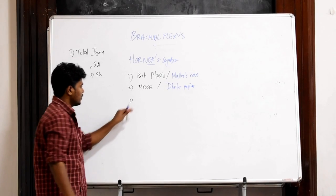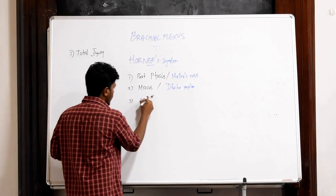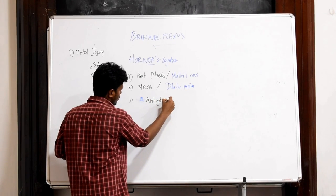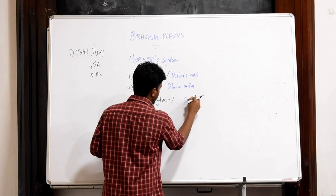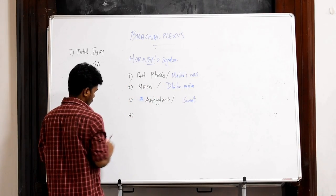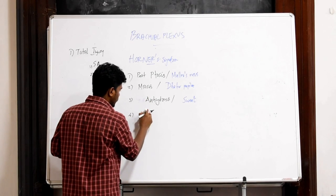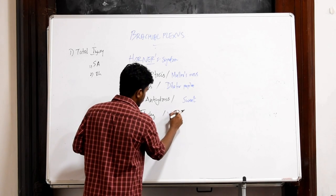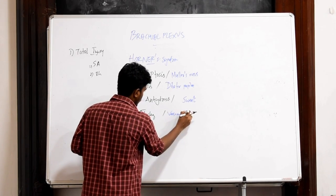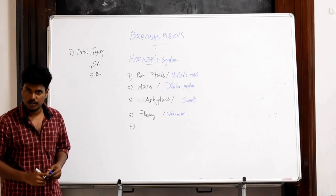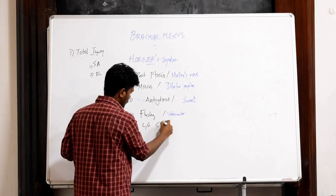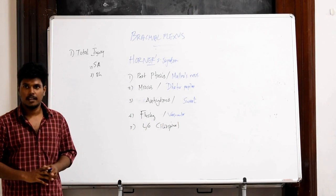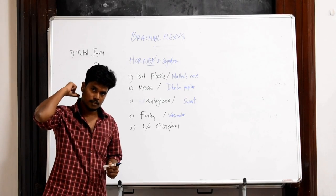Next we will have anhidrosis or absence of sweating due to damage to the sudomotor supply. We will have flushing in the face due to vasomotor problems and finally there is loss of ciliospinal reflex. Ciliospinal reflex is actually the constriction of pupil by the pinching of the skin of neck.